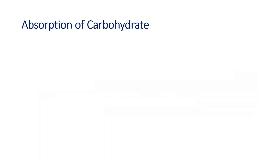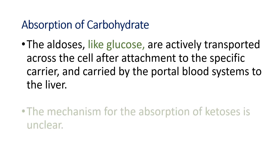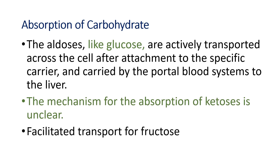Regarding absorption of carbohydrates: aldoses like glucose are actively transported across the cell after attachment to a specific carrier, and carried by the portal blood system to the liver. The mechanism for absorption of ketoses is still unclear. For fructose, there is facilitated diffusion or a facilitated transport system. At equal concentration, galactose, glucose, fructose, mannose, xylose, and arabinose are absorbed in decreasing order of magnitude.